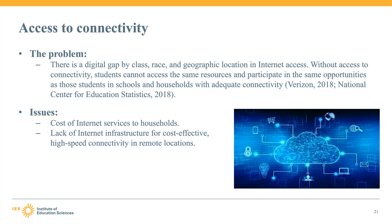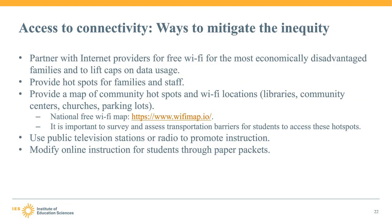How do we mitigate this problem? First, partner with internet providers for free Wi-Fi for the most economically disadvantaged families and lift caps on data usage. Provide hotspots for families and staff — check your E-Rate state site for a list of resources and free community hotspots. Provide a map of community hotspots and Wi-Fi locations on your website. For students who truly do not have access to high-speed internet, think about how information can be delivered through phone call or mail.